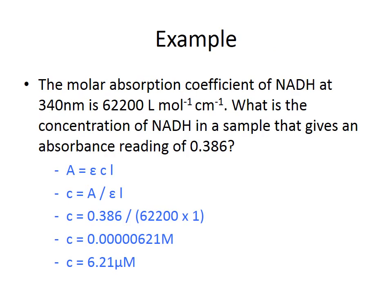As an example: the molar absorption coefficient of NADH at 340 nanometers is 62,200 liters per mole per centimeter. If a sample of NADH has an absorbance of 0.386, what is the concentration? Using the rearranged Beer-Lambert equation, C = A / (εL), we get 0.386 divided by 62,200 multiplied by 1 centimeter, giving a concentration of 6.21 micromolar.